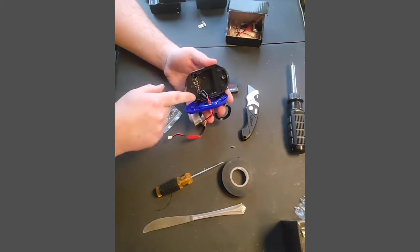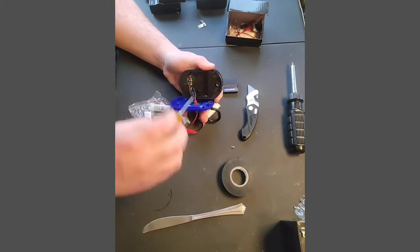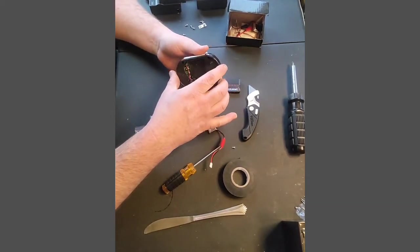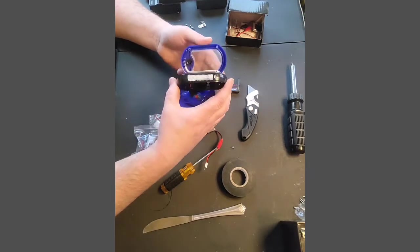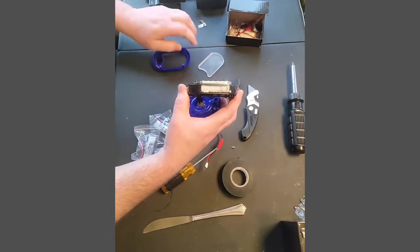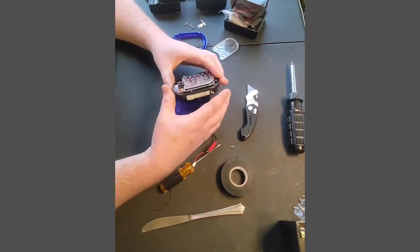Next there's four screws. Once you take this apart, this front piece comes off. It's got a little piece of glass in here. Set those off to the side.